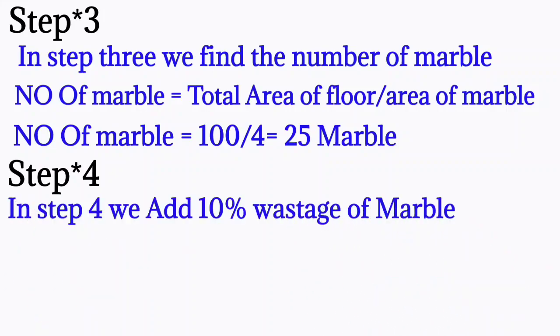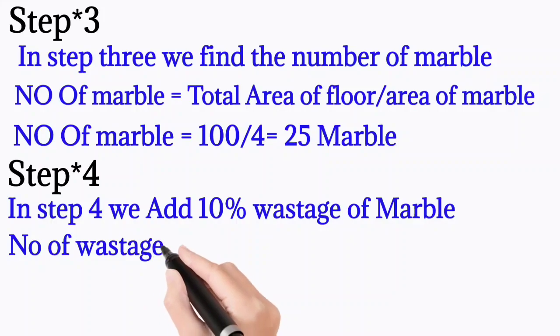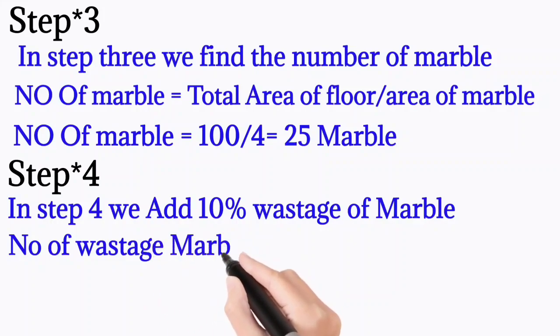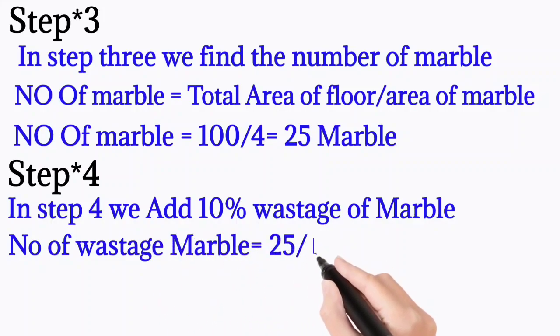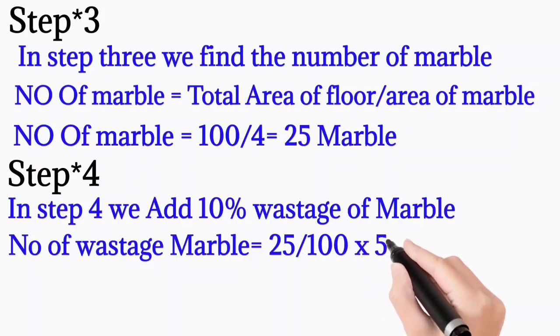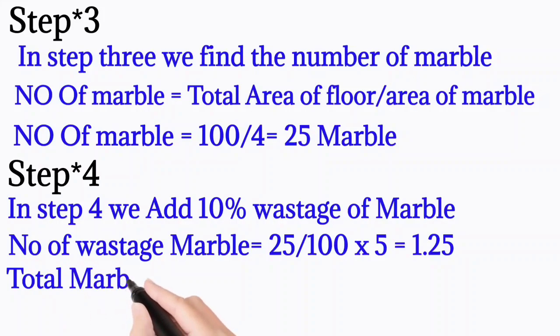Step number 4: In step 4 we add 10% wastage of marbles. So number of wastage marble is equal to 25 divided by 100 multiplied by 5, so it comes out 1.25 marbles.